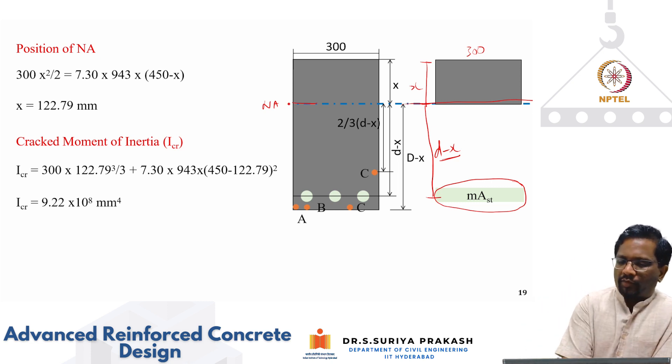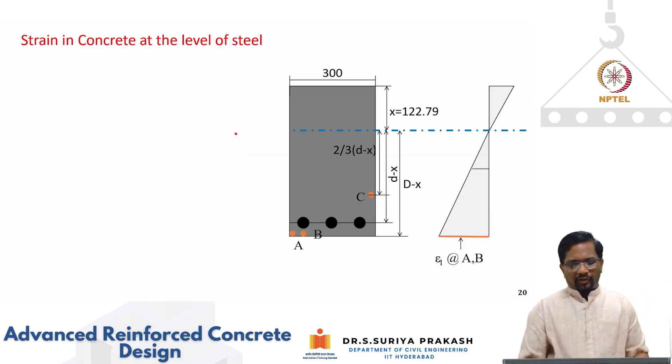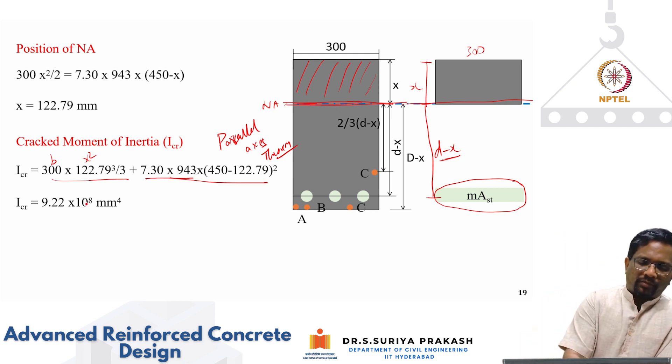Small d is 450 minus x. x works out to be 122.79 millimeter. What is cracked moment of inertia? We are calculating the cracked moment of inertia through neutral axis depth as an axis. We take this as an axis for this area, it is going to be b x square by 3. That is your area of compression area. We are calculating about neutral axis. The moment of inertia of the bar through its cg is going to be less. Using parallel axis theorem, it is just the area multiplied by the distance between the location of this MAST and the neutral axis, which is d minus x the whole square. You got ICR is 9.22 into 10 to the power of 8 millimeter to the 4.